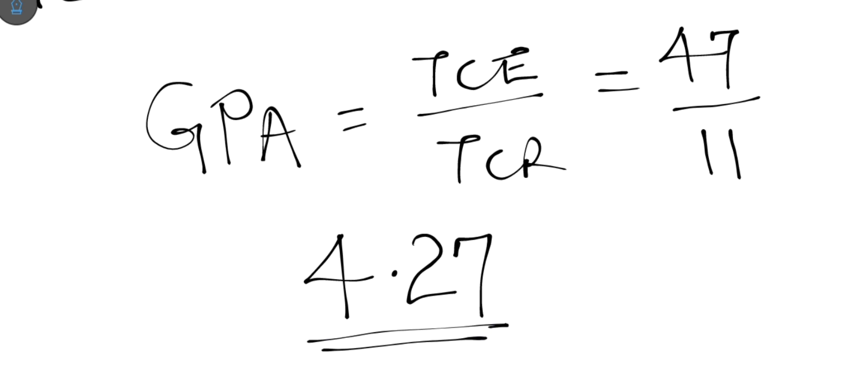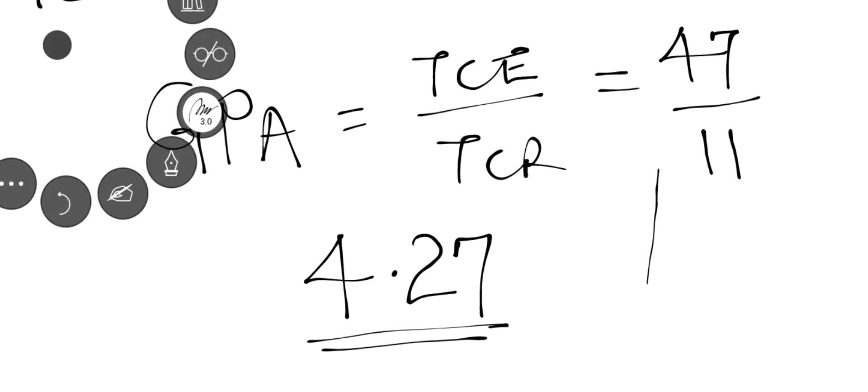GPA is the grade point average per semester — each semester has its own GPA. However, what ultimately matters is the CGPA, the Cumulative Grade Point Average. A common mistake is adding the GPAs of individual semesters and dividing by the number of semesters. That approach introduces errors and is not the correct way to calculate CGPA.